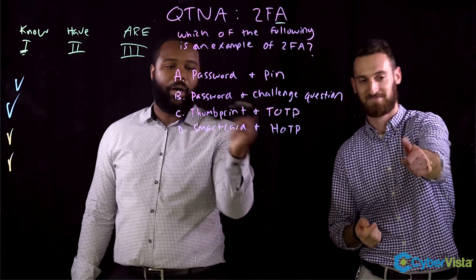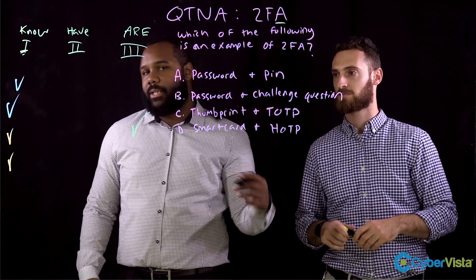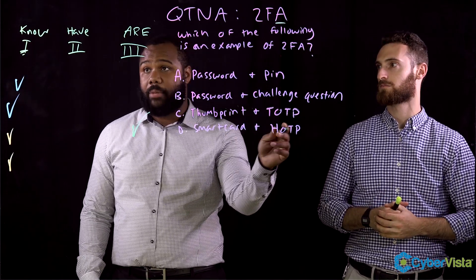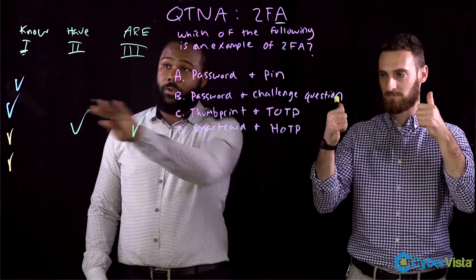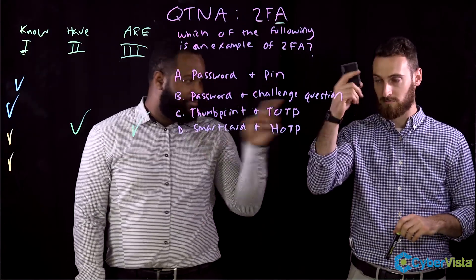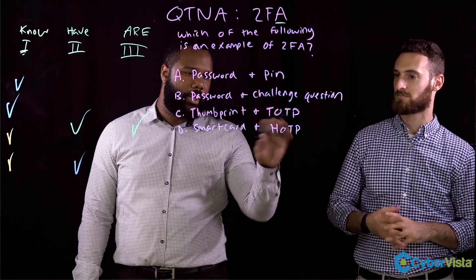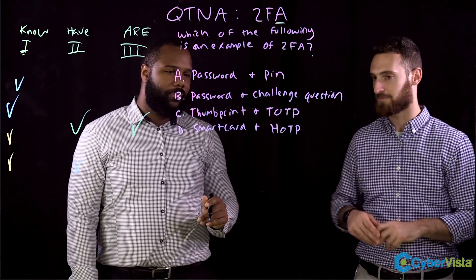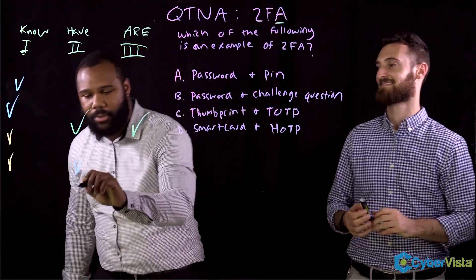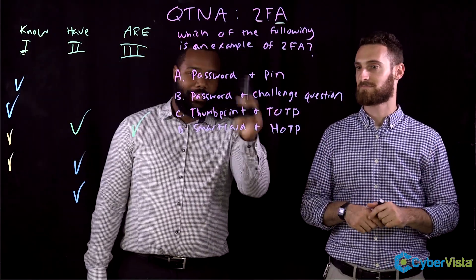For option C, we have a thumbprint, which falls under something that you are, and a TOTP — a time-based one-time password — which is a code sent to you that you have a certain amount of time to use, falling under something that you have. That's two factors across two types. For option D, a smart card is something that you have, and an HOTP — HMAC one-time password — is also something that you have, so that wouldn't work. That leaves us with C: thumbprint and TOTP.